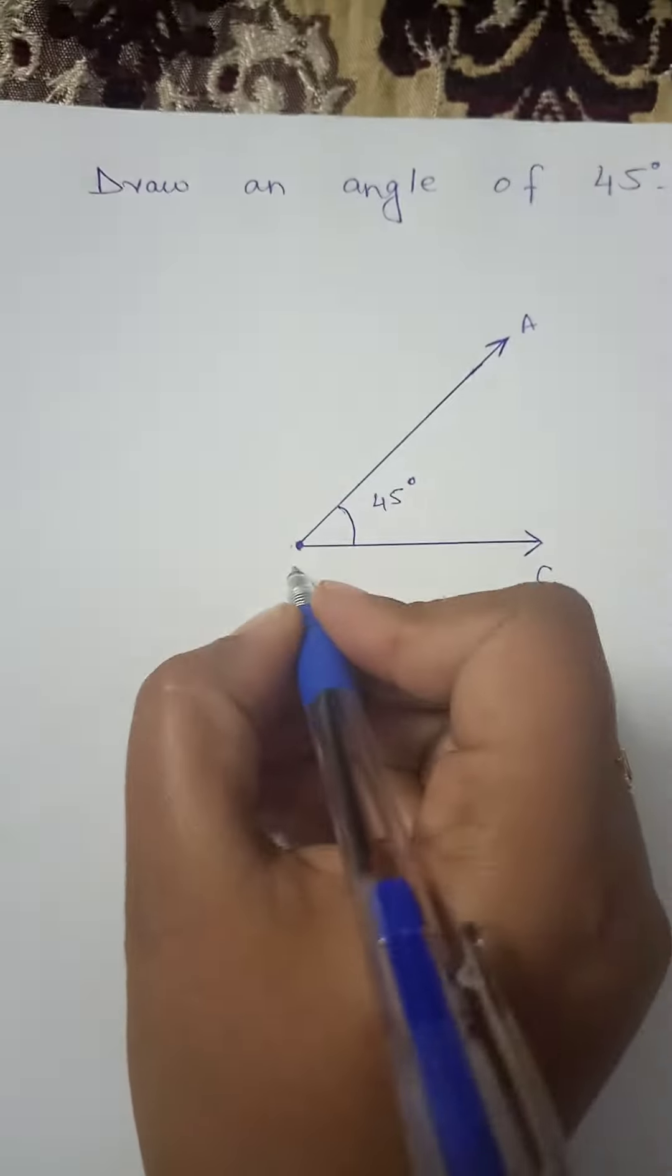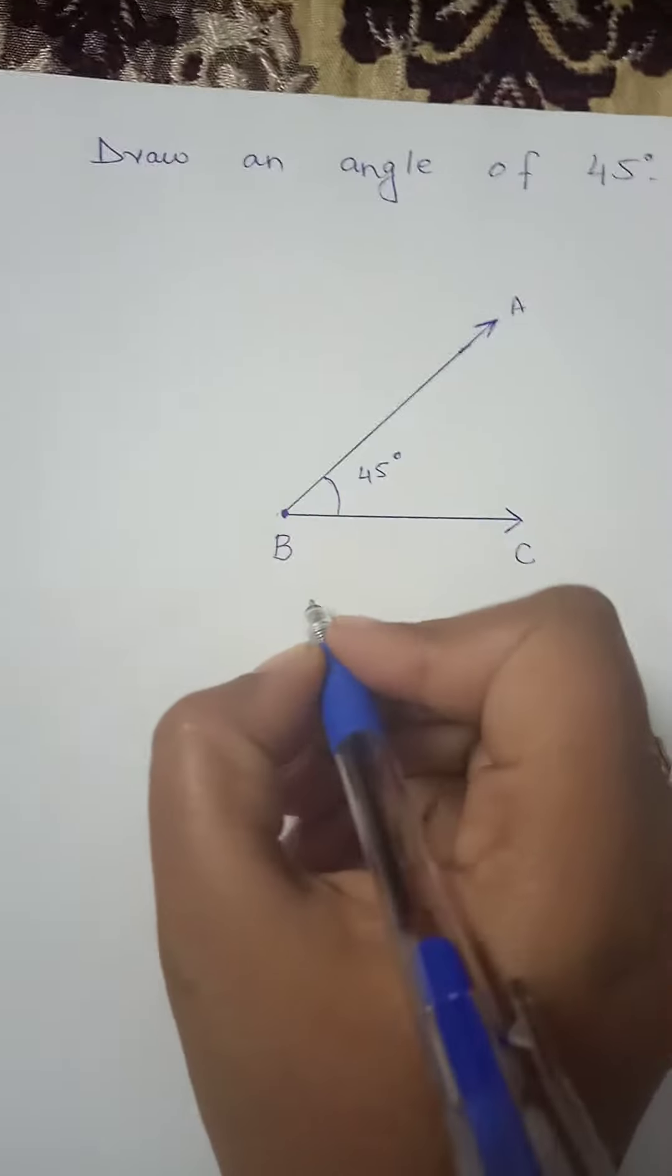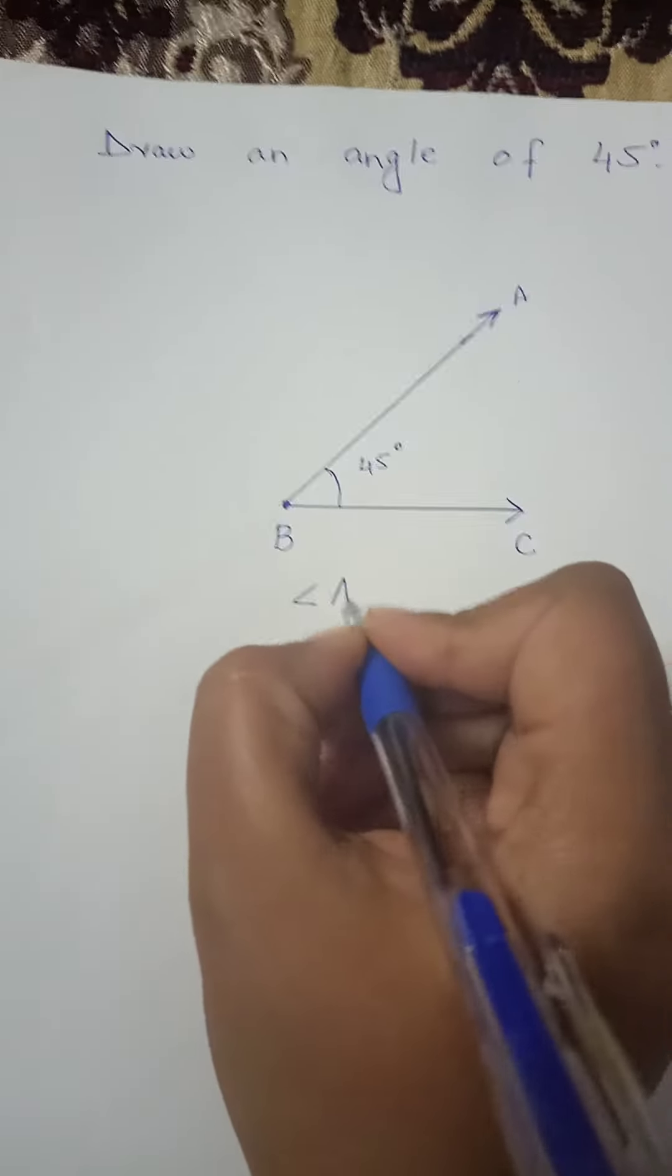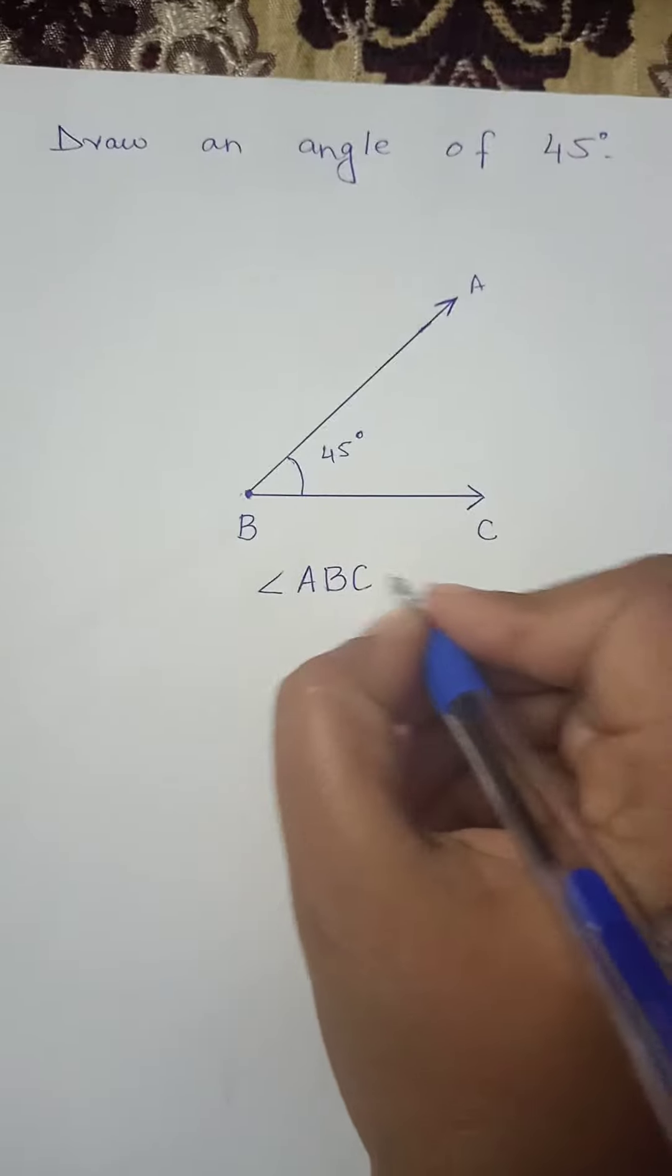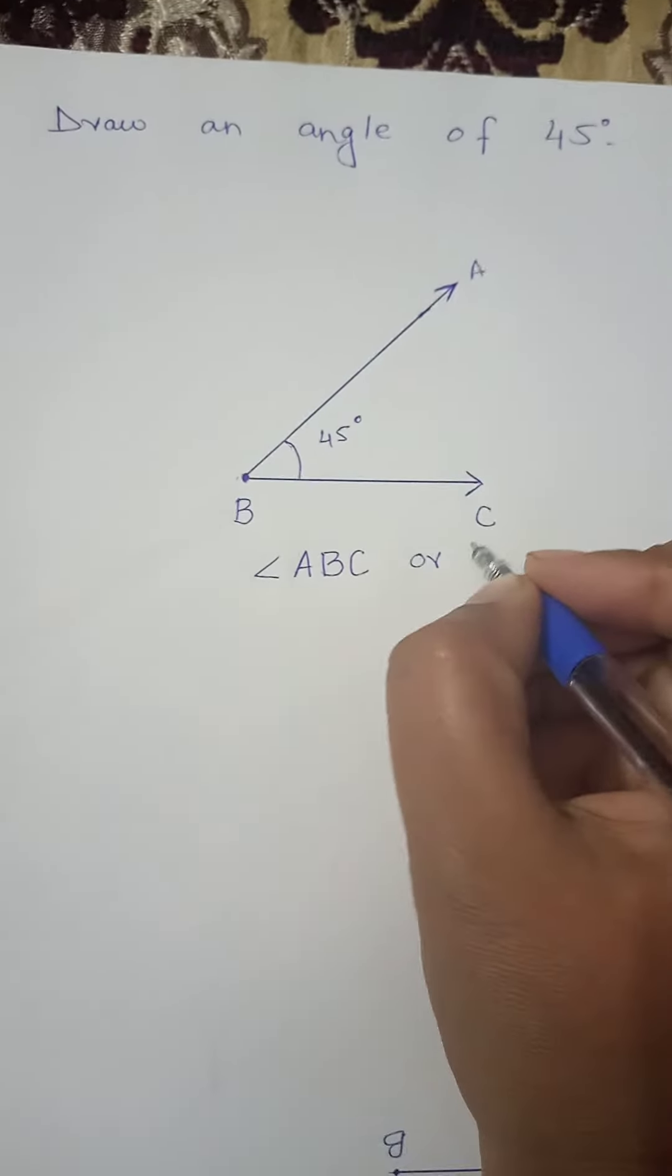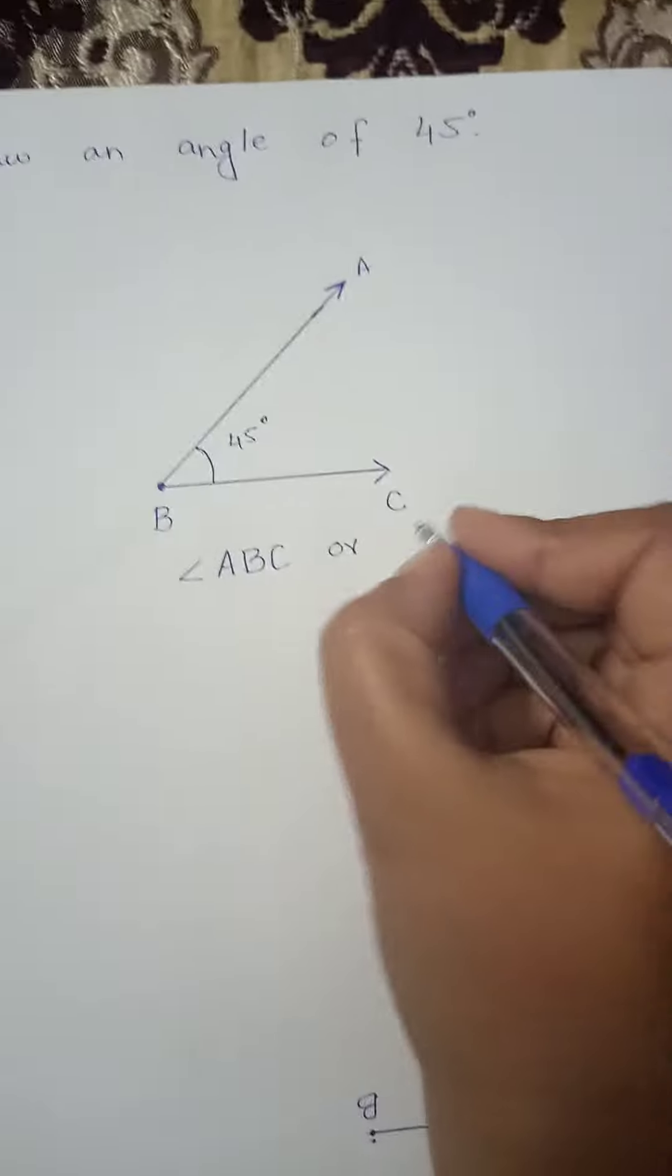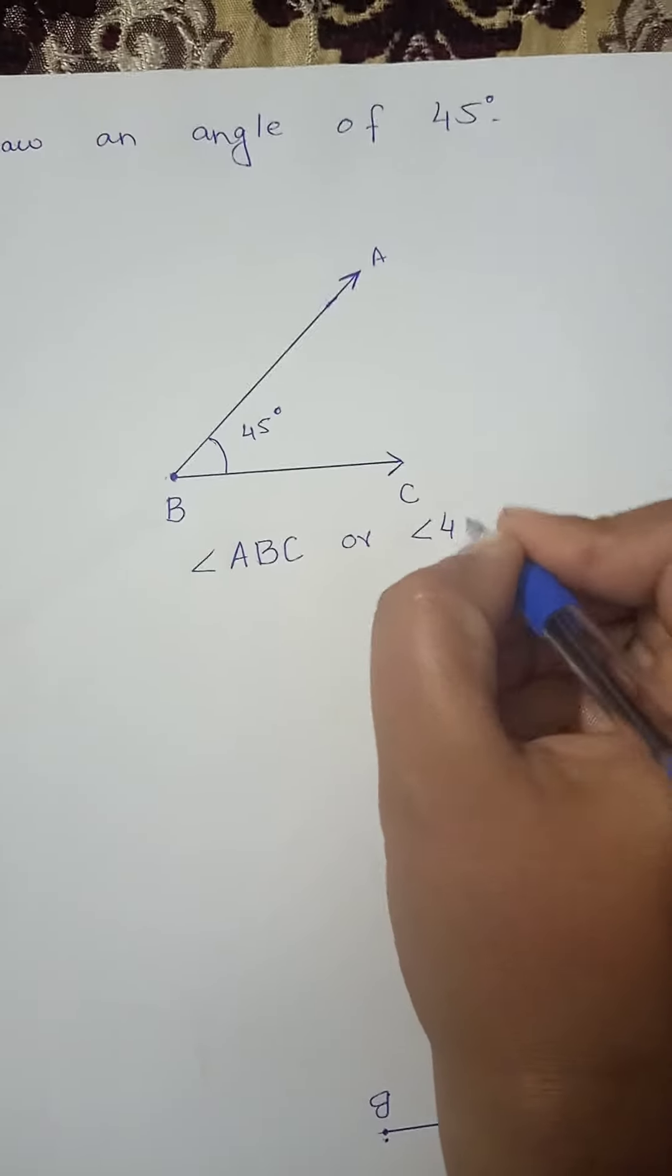We draw this angle ABC and you can write this way. Here we mention angle 45 degree, and you can write angle CBA - sorry, I missed angle - angle CBA.